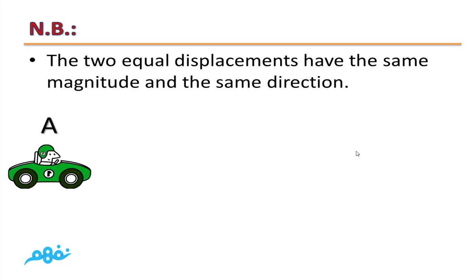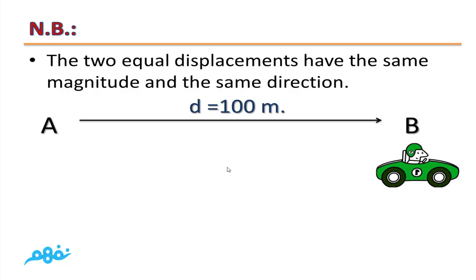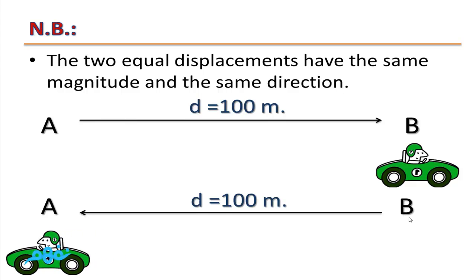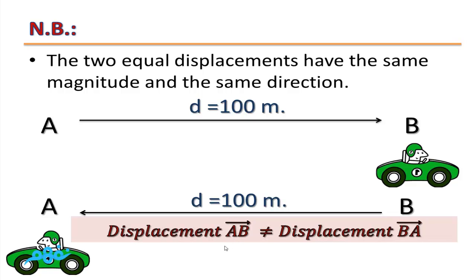Two displacements are equal only if they have the same magnitude and the same direction. For example: a car moves from point A to B, a distance of 100 meters, then returns from B back to A, covering 100 meters again. Are the two displacements equal? The answer is no. The first displacement is from A to B in one direction, while the second is from B to A in the opposite direction. For two displacements to be equal, they must have the same magnitude and the same direction.